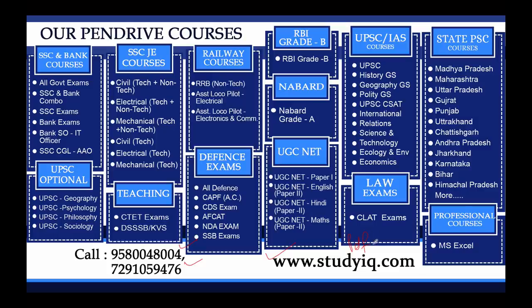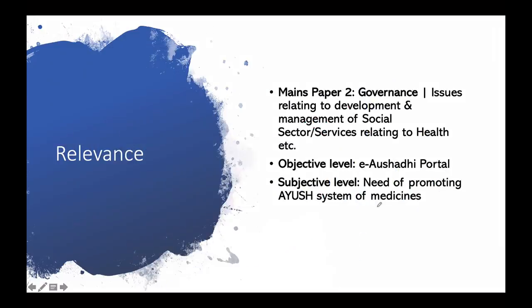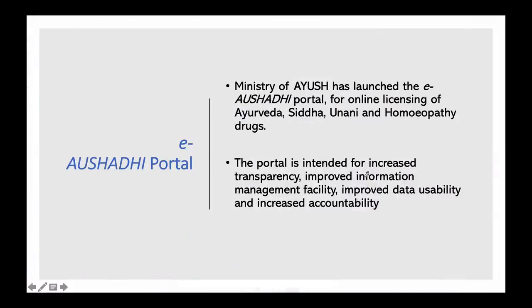Now, what is the relevance of this topic from your exam point of view? In your mains paper on Governance, it will be covered under social sector services relating to health. At the objective level: what is this Aushidi portal and what are the main features? At the subjective level: what is the need of promoting the AYUSH system of medicines in the country?